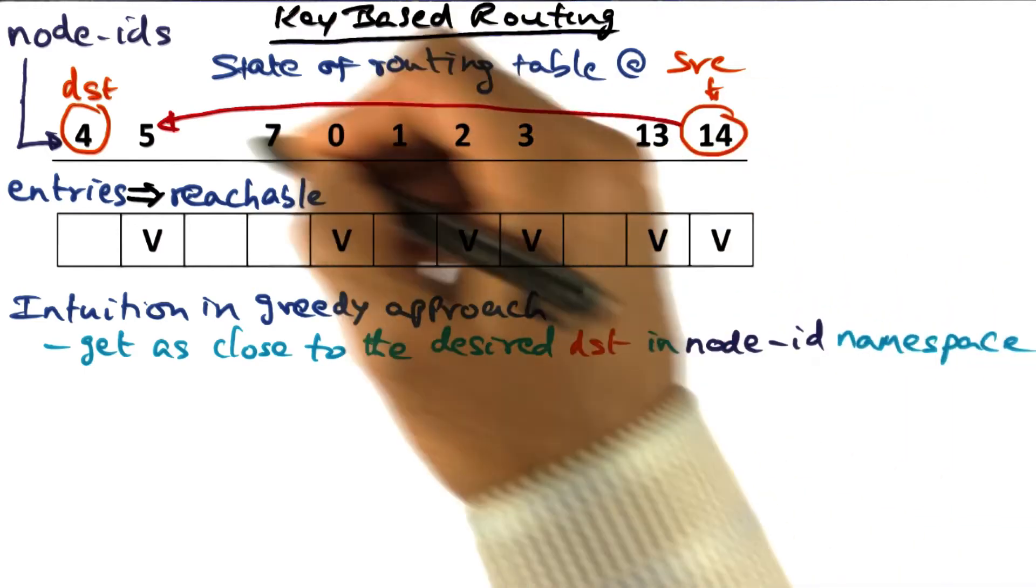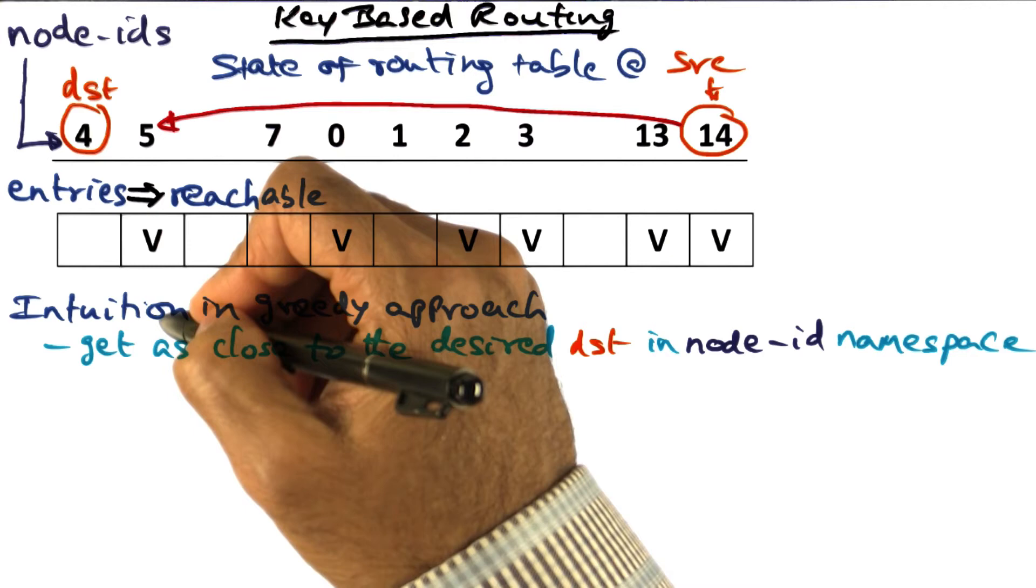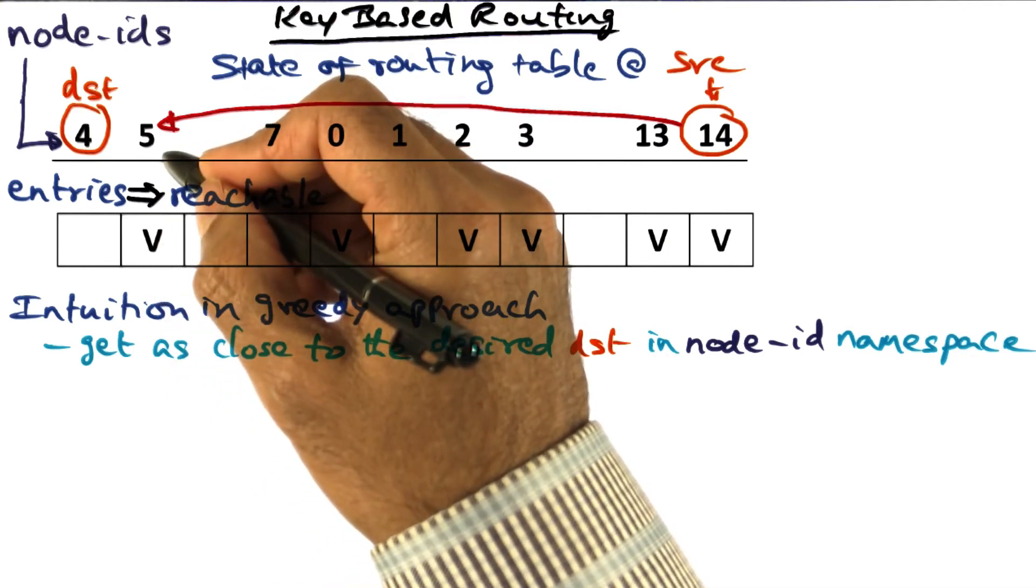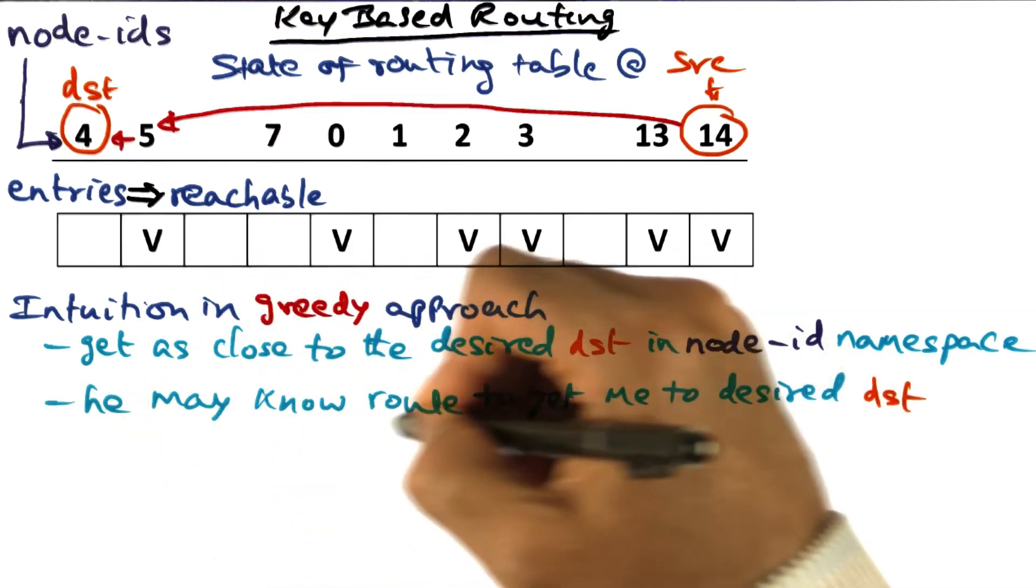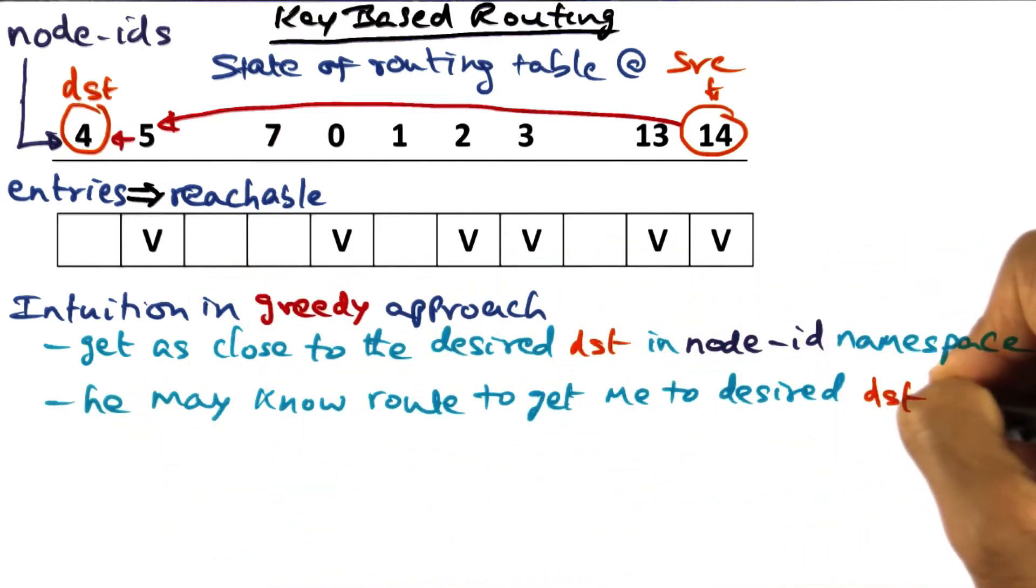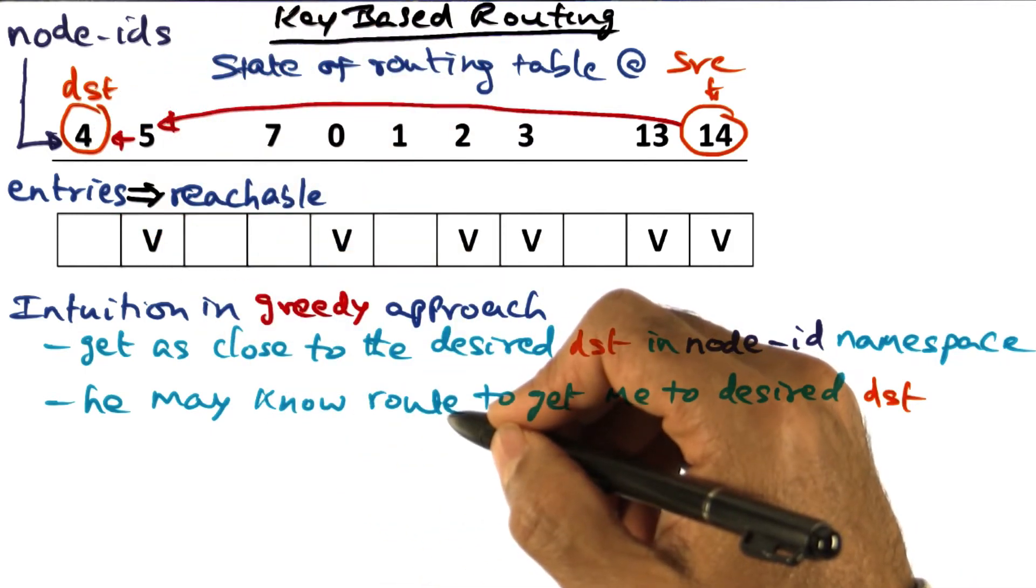So I'm going to ask this guy, because I know how to reach him and he's close to my desired destination: Do you have a way of getting to destination 4? My hope is that he may know the route to the desired destination, and I'll be done getting the key-value pair I'm looking for.